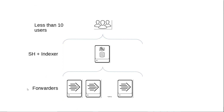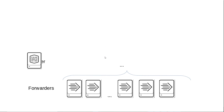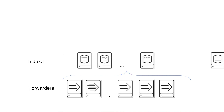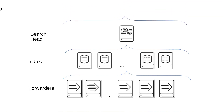For a small deployment we have a couple of forwarders and a single Splunk instance acting as both search head and indexer. In the next slide, as we add more forwarders, we need more indexers to ingest that data volume, with a single search head accessing all these indexers — note these indexers are not in a cluster yet.